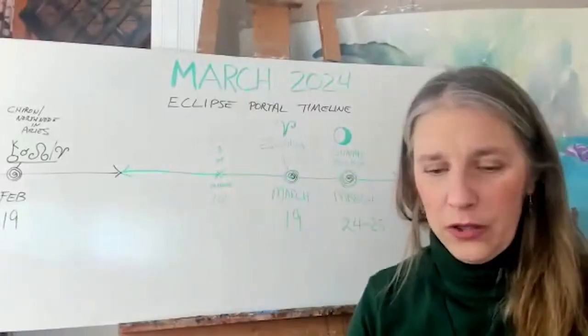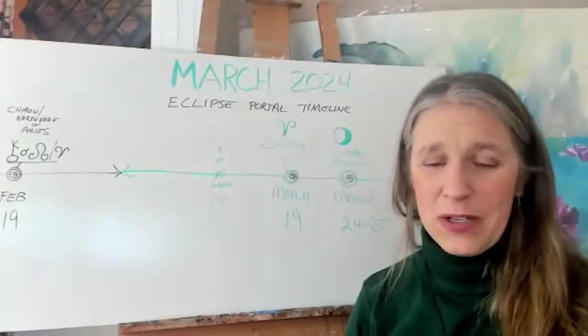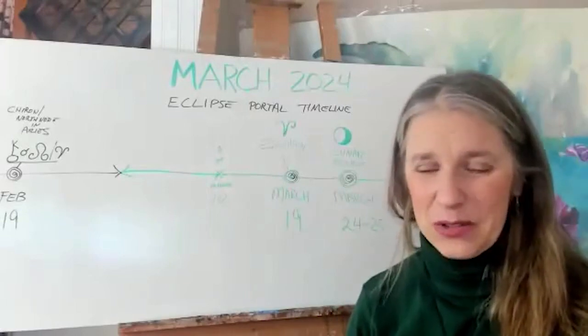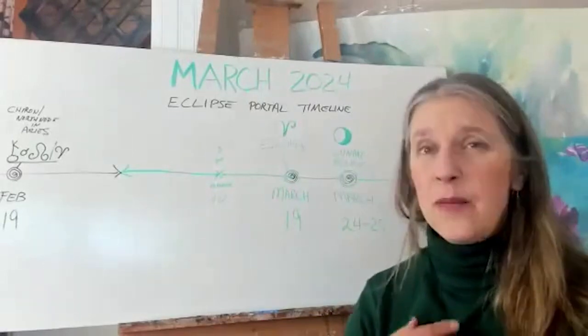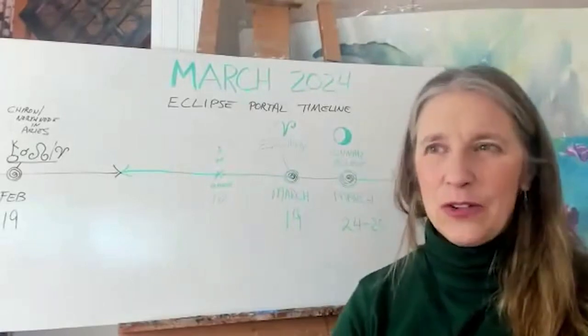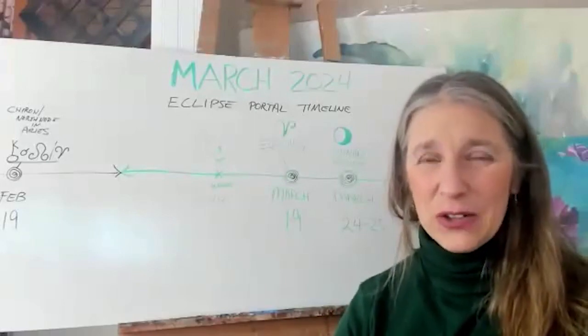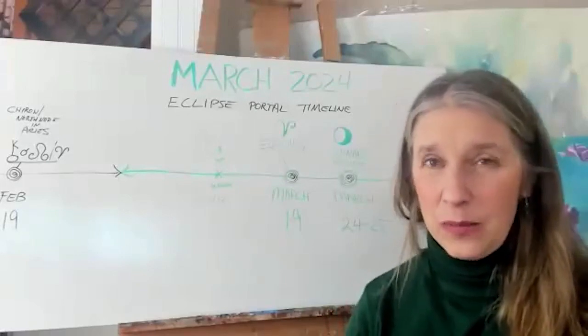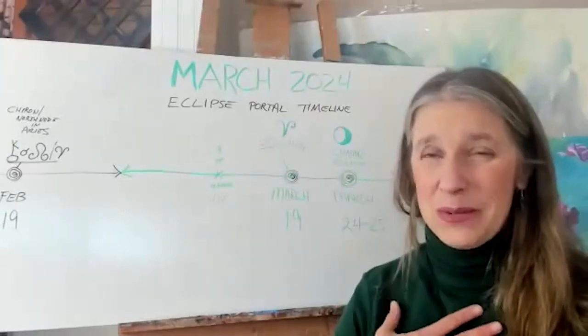Also grounding, we want to be grounded to participate I'm told. So we want to really be taking care of our bodies, making sure we get enough sleep, making sure we're eating well. Also if you can get outside, if it's already spring where you're at and actually get into the earth, maybe do some gardening, that'll be really helpful as well.